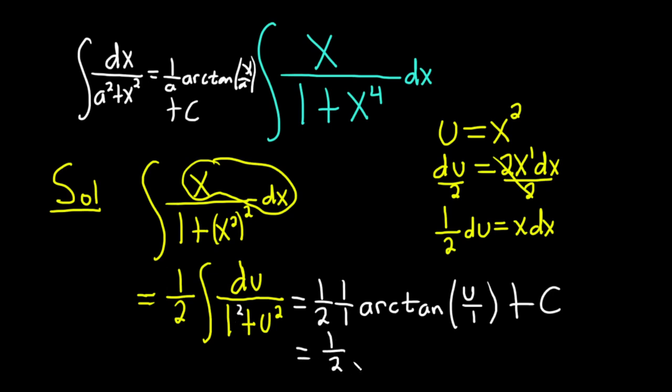This is 1 half arctan. u over 1 is just u. But u is x squared. So it's arctan of x squared plus our constant of integration.